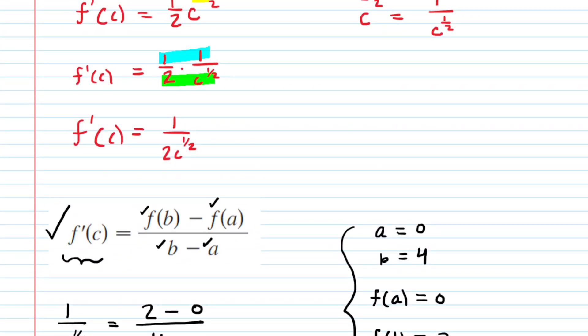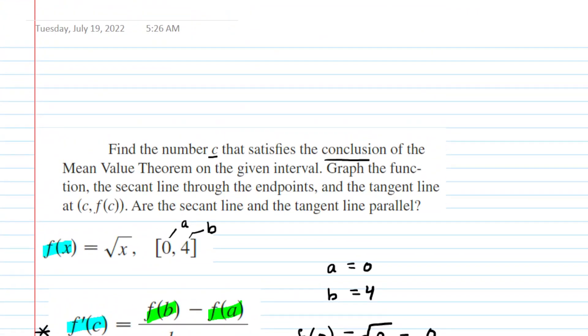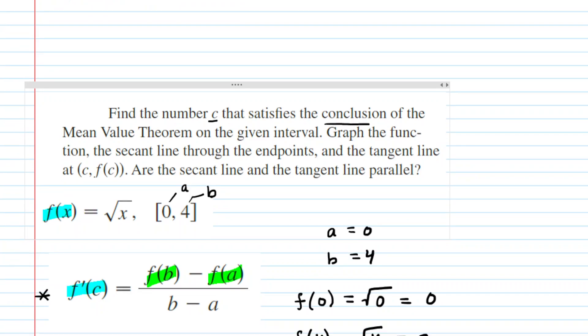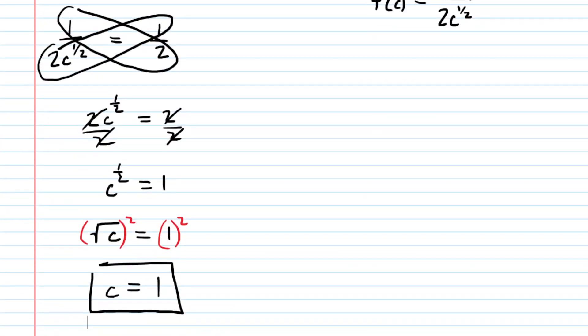There was another aspect to the question. If we go back and take a look, it says to graph the function, the secant line through the endpoints and the tangent line at (c, f(c)). And then we're asked if the secant line and tangent line are parallel. So that's a bit of a mouthful. Let's go ahead and graph the function on the interval from 0 to 4.